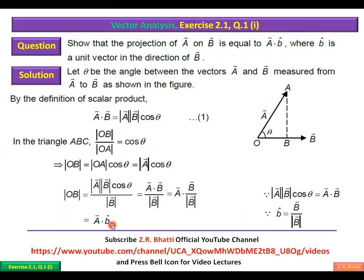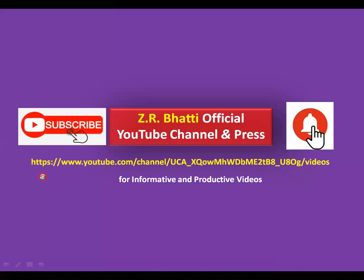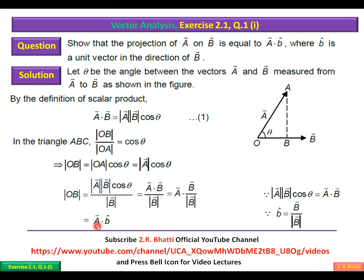Quickly, we have A component along B. A component along B is A dot b, where b is a unit vector along the vector B. Finally, we have the result: a component of vector A on B is the dot product of vector A and the unit vector along B.